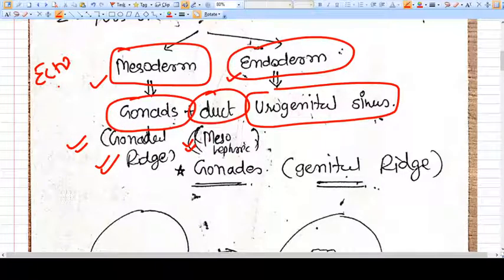This gonadal ridge will make gonads. In males it means testis. And this duct, the mesonephric duct or Wolffian duct, will make other parts of the male reproductive system. This urogenital sinus also takes an important part in making the reproductive system in both male and female.